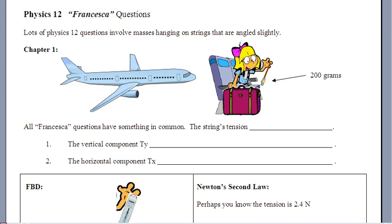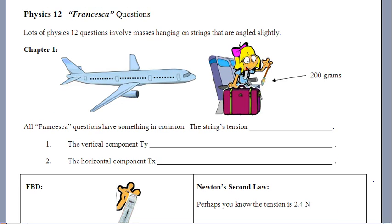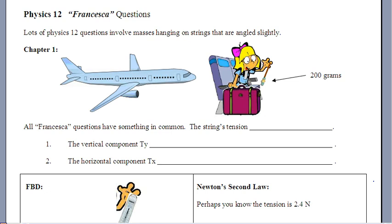But we're going to see if we can use that to figure out exactly what the acceleration of the airplane is. Then you could just do kinematics and find the speed. So I've got here all Francesca questions have something in common. The string's tension, I'm going to say this, it has two jobs.